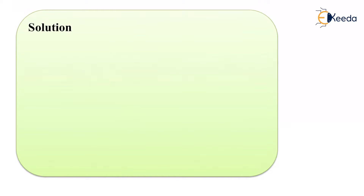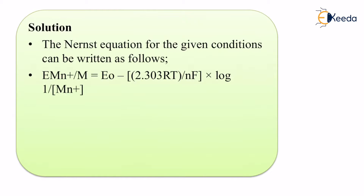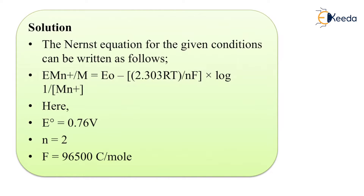Now let us move on to the solution. The Nernst equation for the given conditions can be written as: E = E° - (2.303RT / nF) × log[1/Mn+]. Here, E° is -0.76 V as given, n = 2 (since it is a 2+ ion), F = 96500 C/mol, and R = 8.314 J/mol·K.